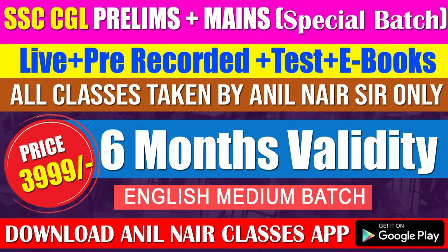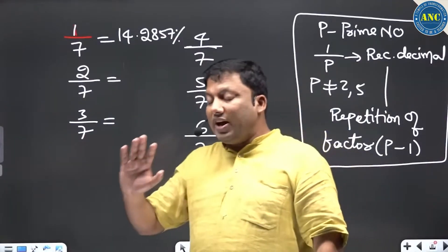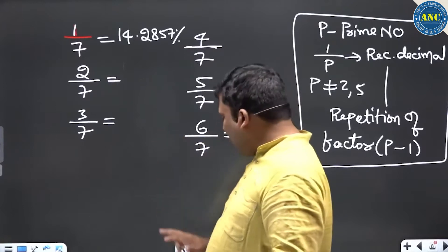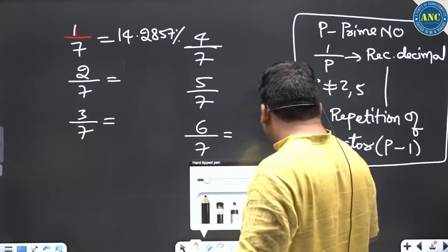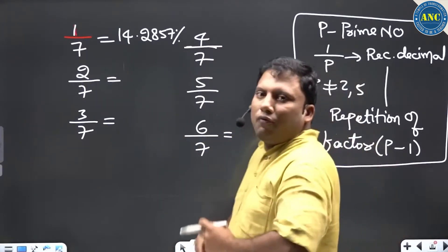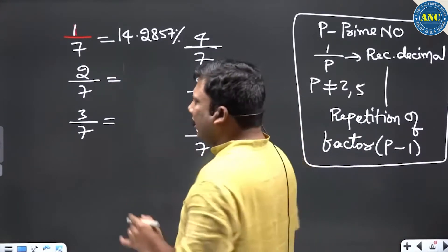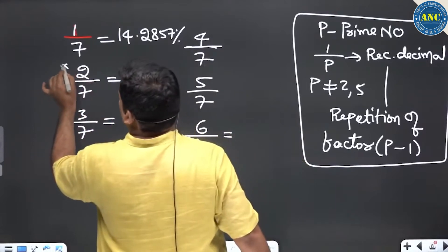Very important for you to pay attention. 1/7 is 14.2857. Now if you observe, I want 2/7. Don't mug it up. Step number 1: take the numerator.